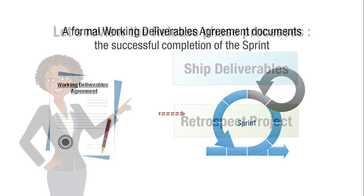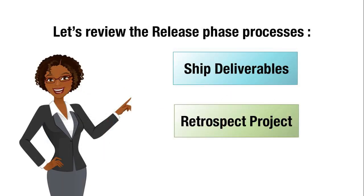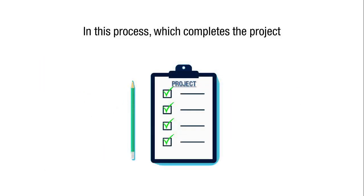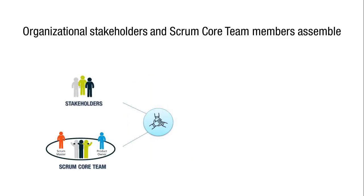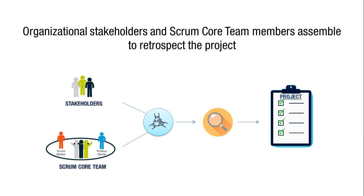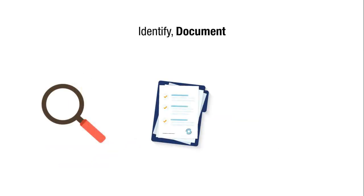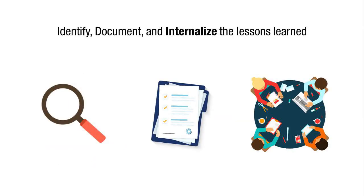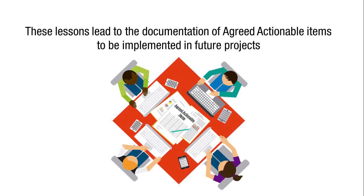The second process is Retrospect Project. In this process, which completes the project, organizational stakeholders and Scrum core team members assemble to retrospect the project and identify, document, and internalize the lessons learned. Often, these lessons lead to the documentation of agreed actionable items to be implemented in future projects.